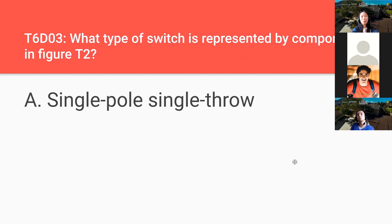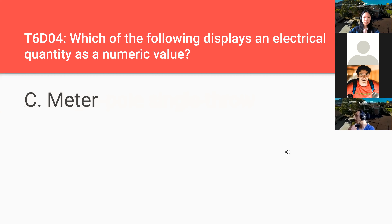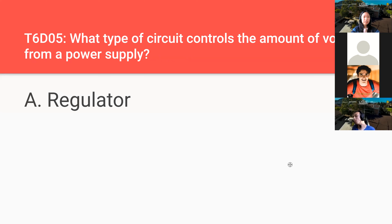What type of switch is represented by component three in figure T2? That's a single pole single throw. Which of the following displays an electrical quantity as a numeric value? A meter — like a voltmeter or an ammeter. What type of circuit controls the amount of voltage from a power supply? A regulator.